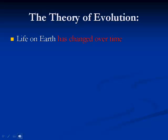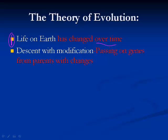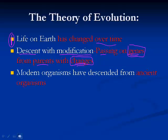So first of all, here are the three points about the theory of evolution. Number one is that life on earth has changed over time — we theorize based on the facts that life on earth has not stayed constant; it changes over time. Number two is that there's been descent — when your parents give birth to offspring, the offspring is modified by passing on genes, and it has changes from one generation to the next. And the last one is that modern organisms have descended from ancient organisms — we have a similar ancestor, and we keep branching off, creating different organisms.